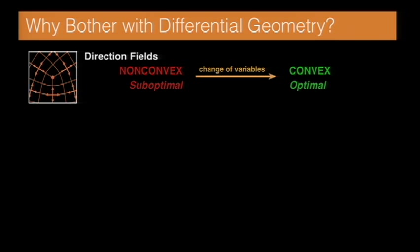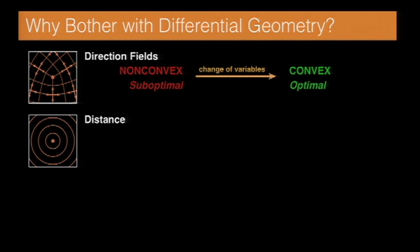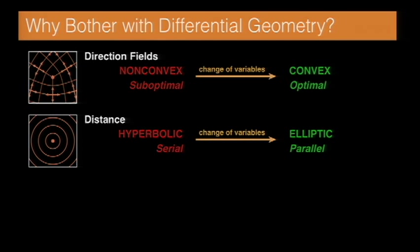So in particular, we're going to look at direction fields and see that a very difficult combinatorial non-convex optimization problem turns into a nice, simple quadratic energy where we can easily compute the global minimizer. When we look at distance computation, we'll see that a nasty, non-linear, hyperbolic problem, which we're forced to solve in serial, becomes a nice, easier, linear elliptic problem that we can solve in parallel.